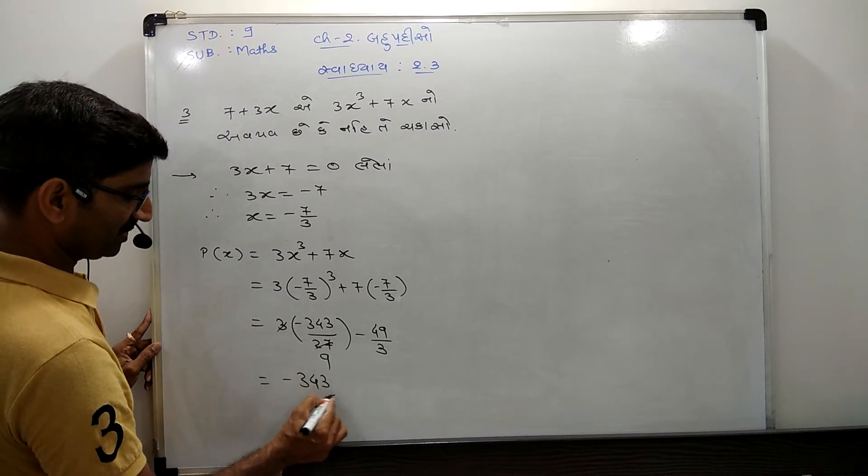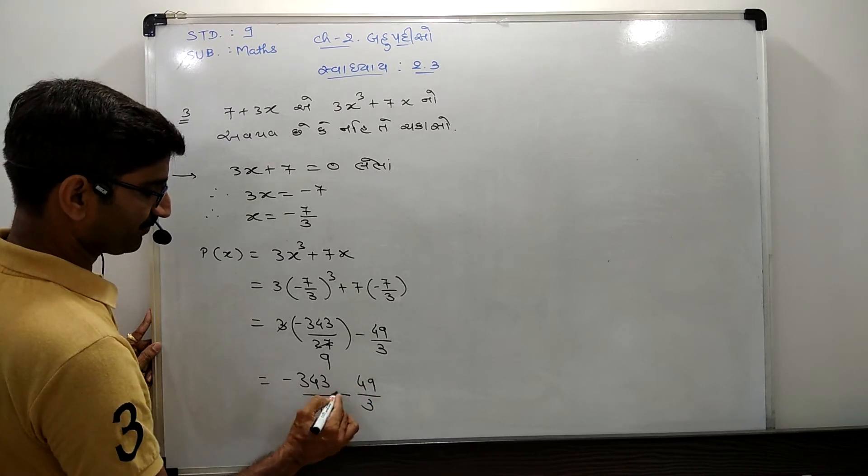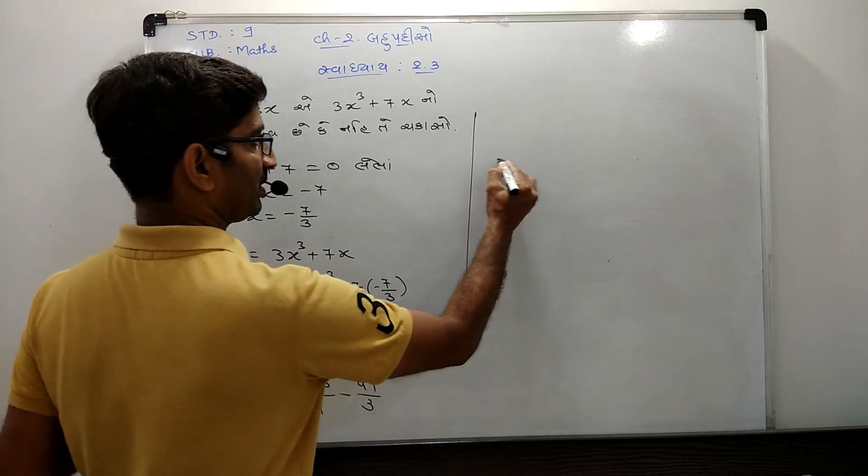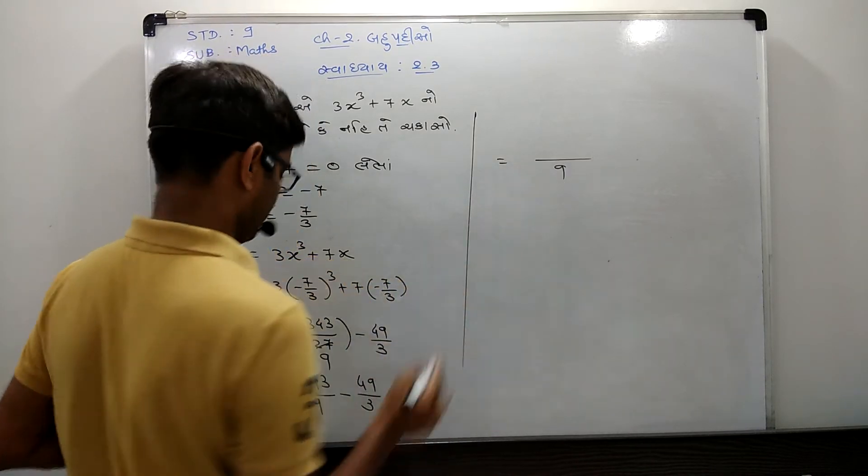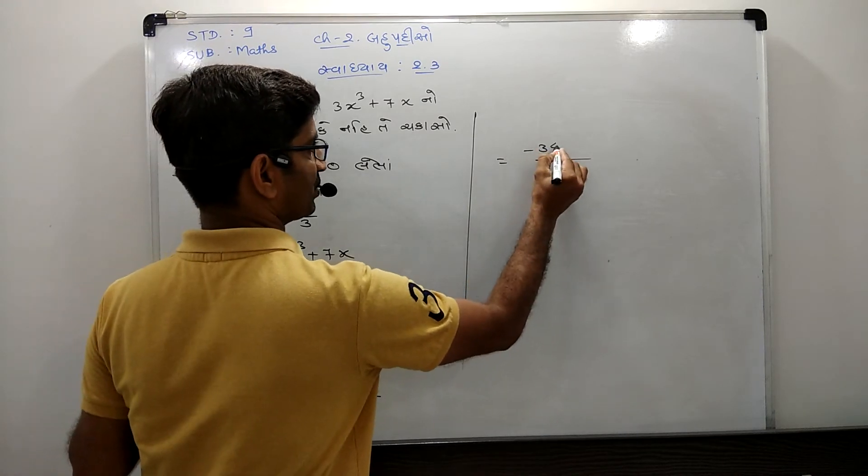Now 3x plus 8 are equal to 0. So, 3x plus 8 are equal to 0. Then 3x plus 9 is equal to 0.